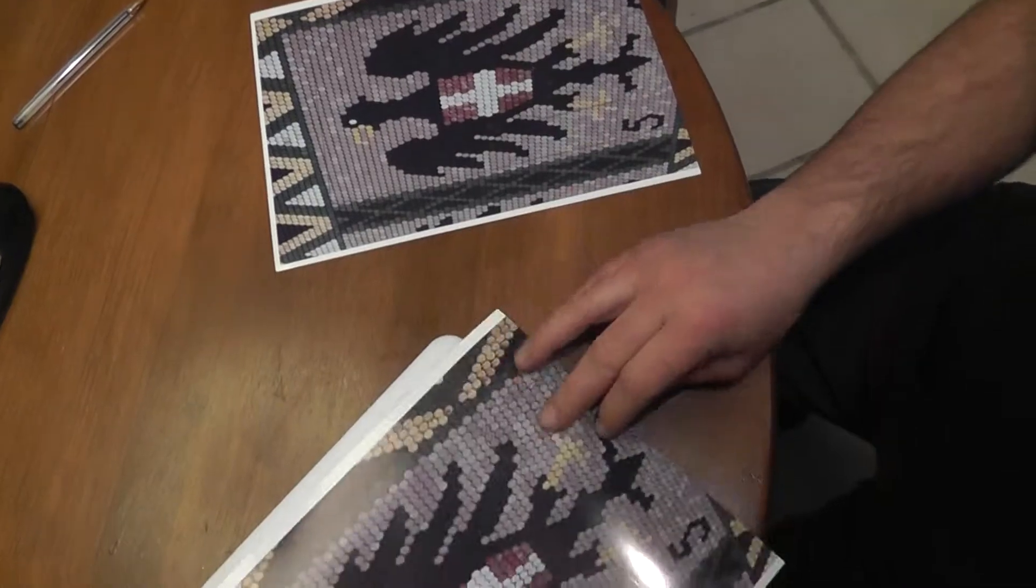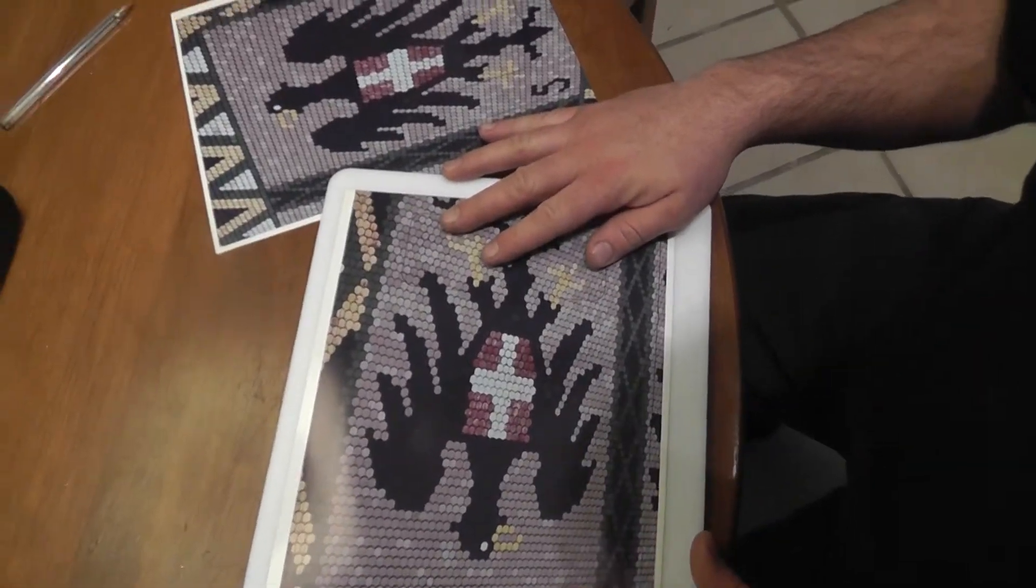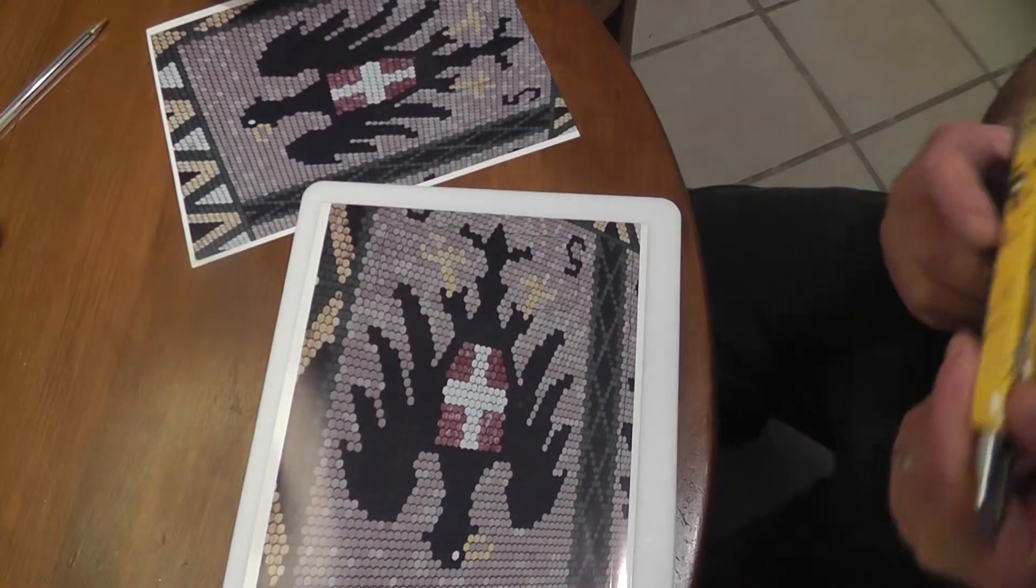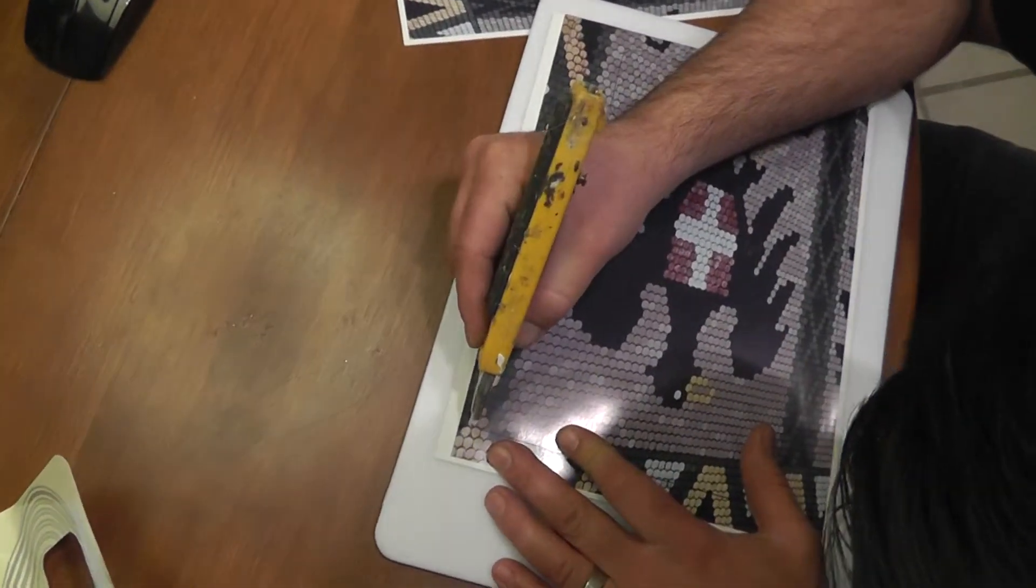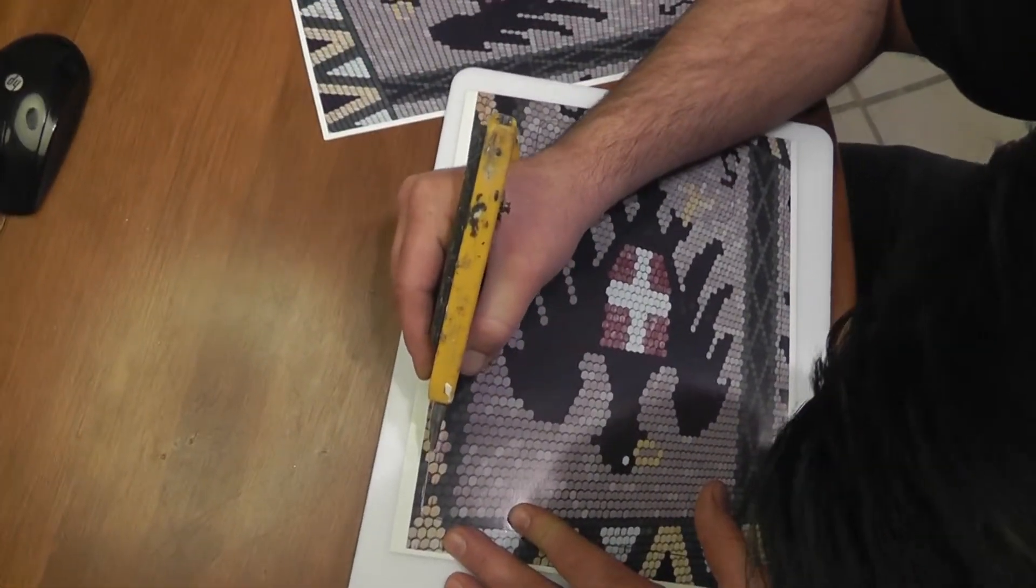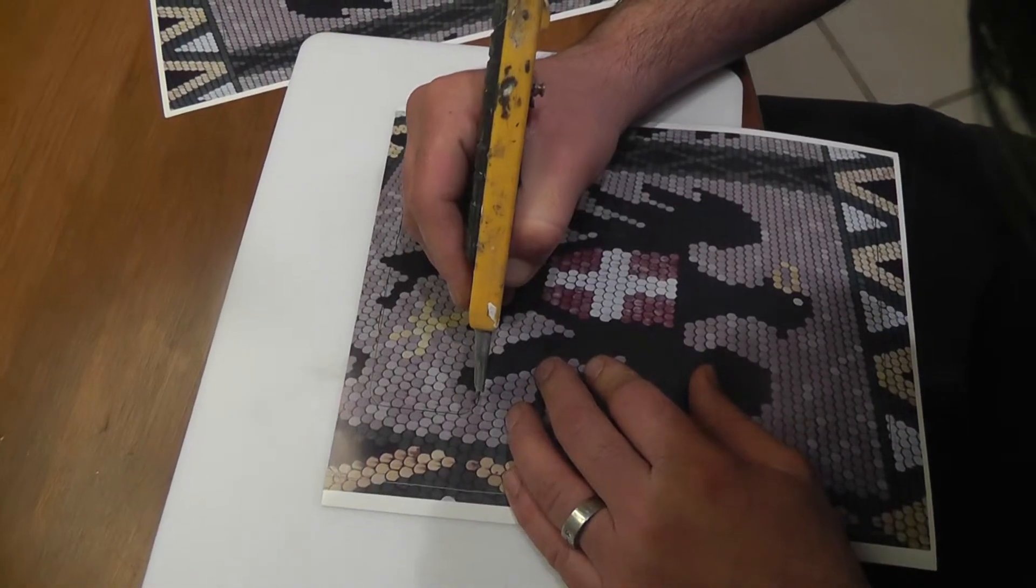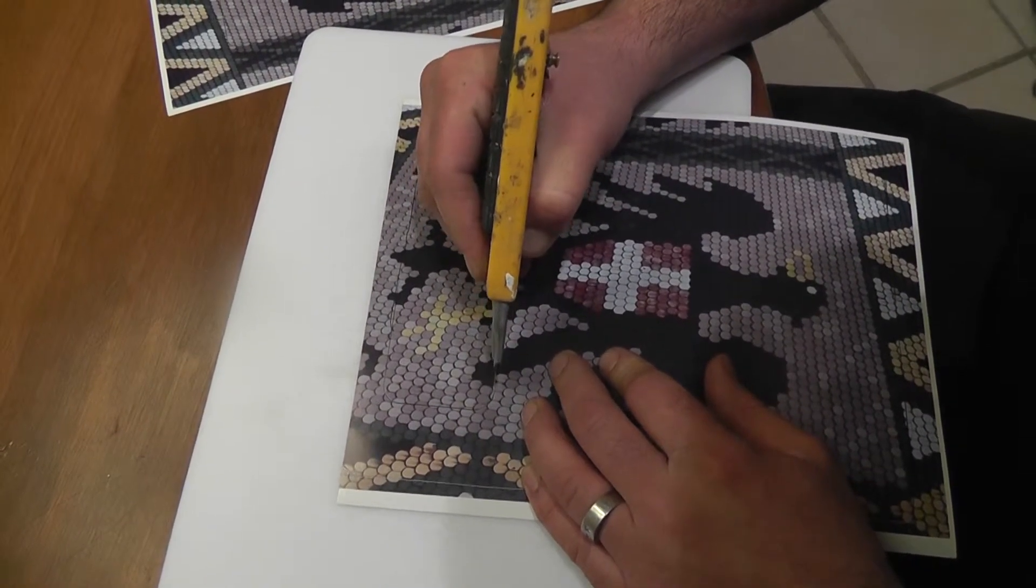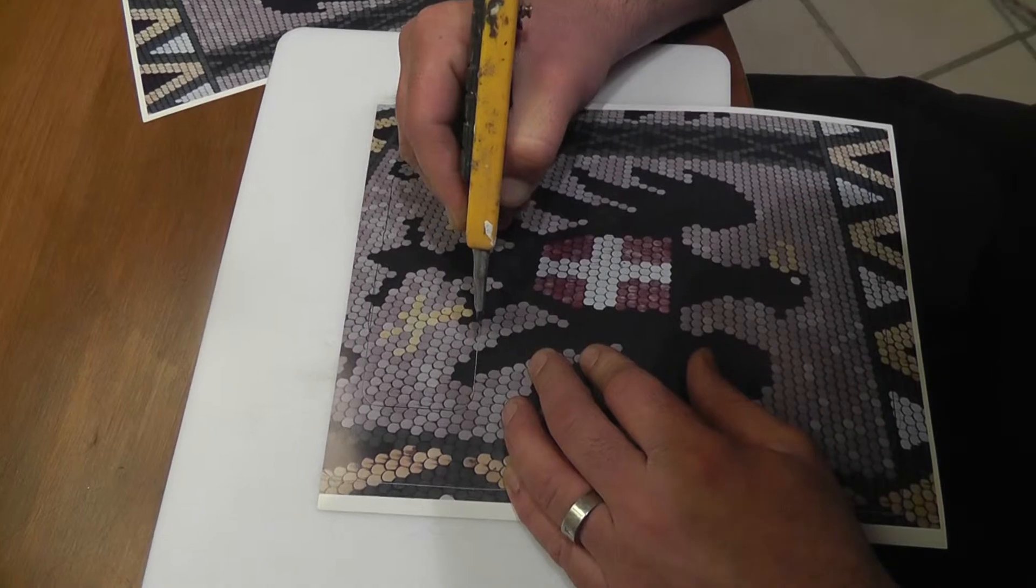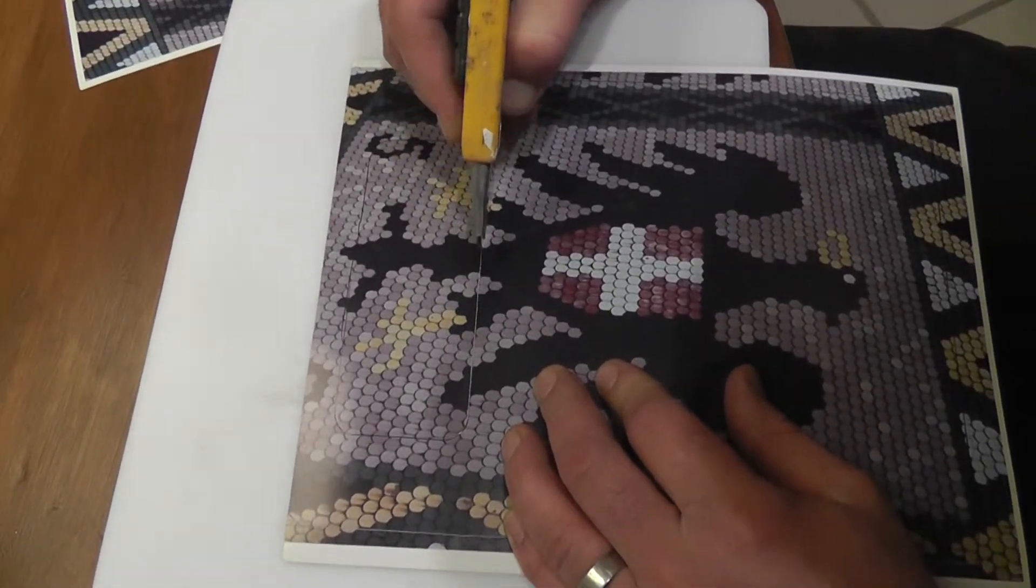Now I use a cutting board and an X-Acto knife. And carefully follow the lines. Also making sure to carefully cut out the inside.